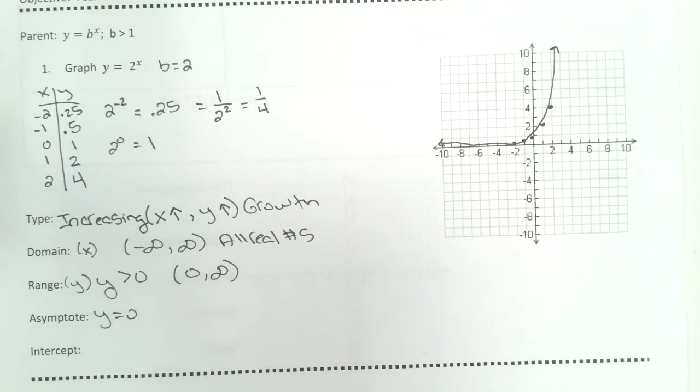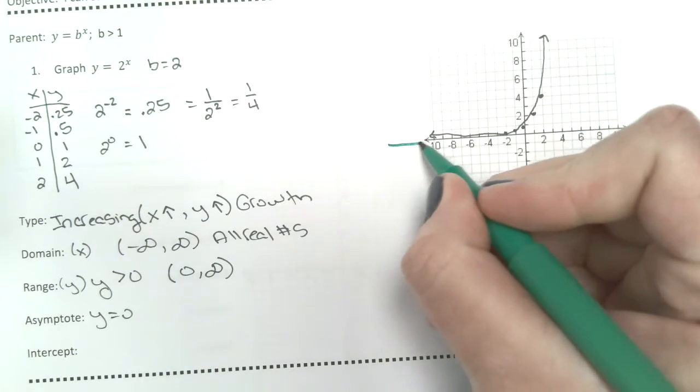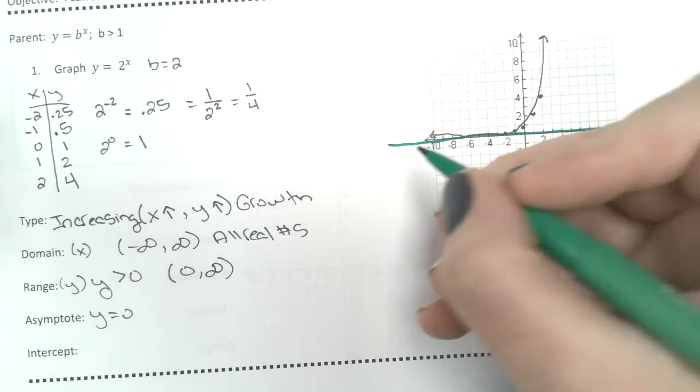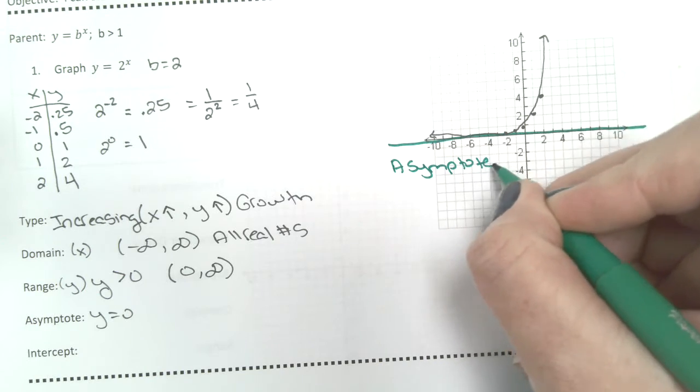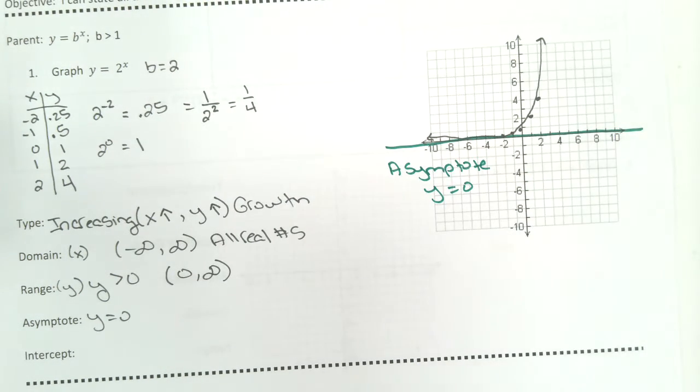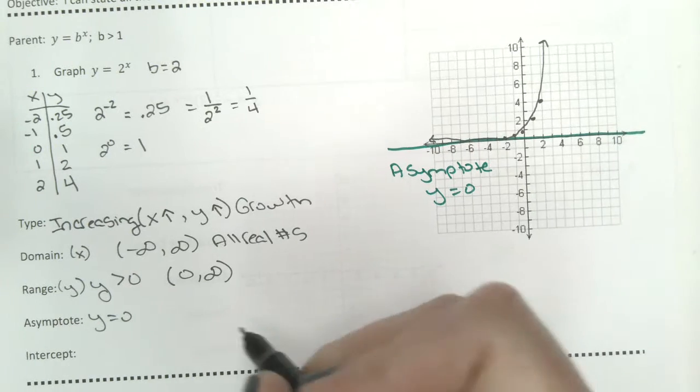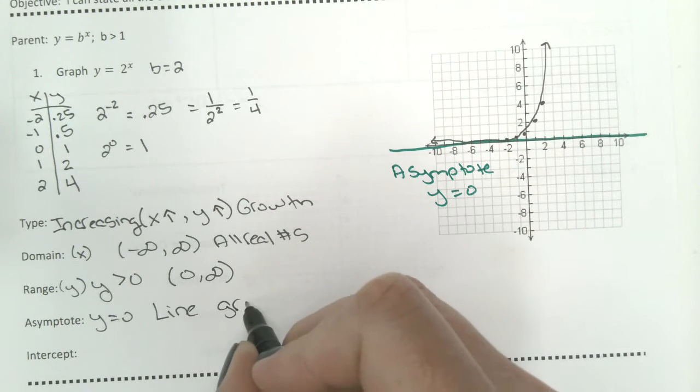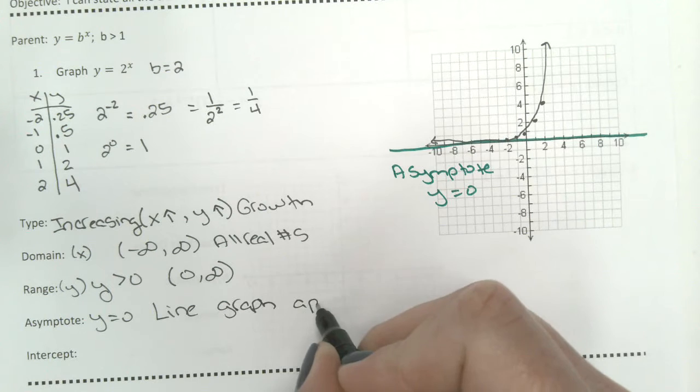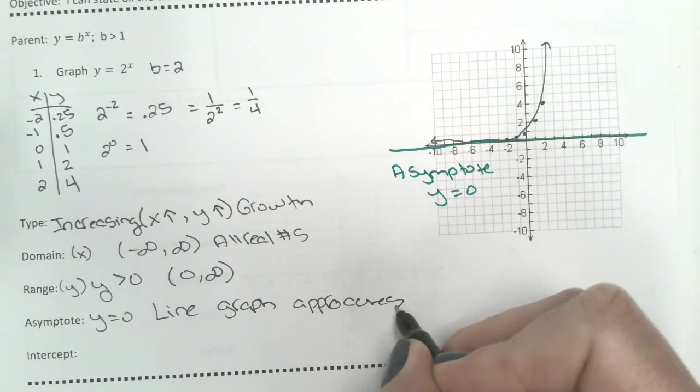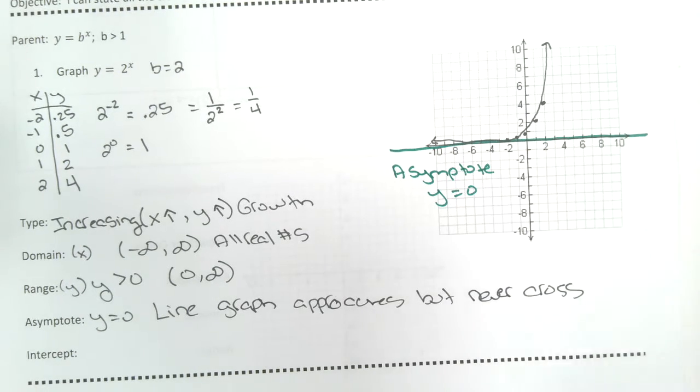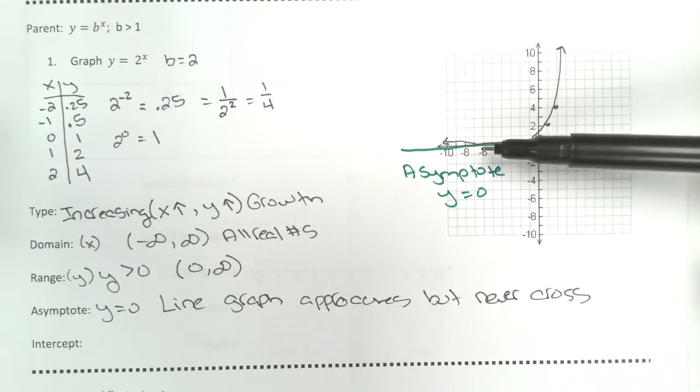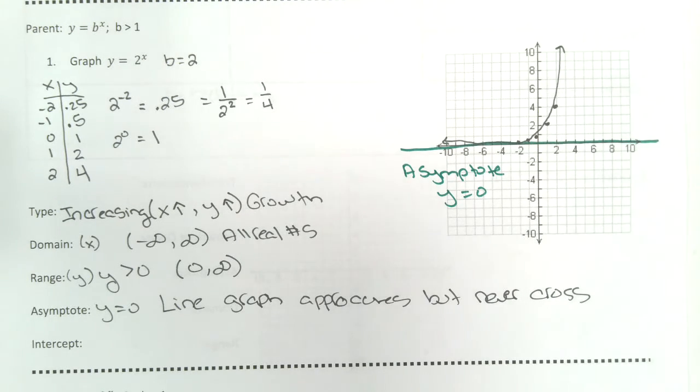The asymptote in this problem is this line y equals 0. An asymptote is a line that your graph approaches, but will never cross. So it comes super close to this line y equals 0, but it never crosses over it.